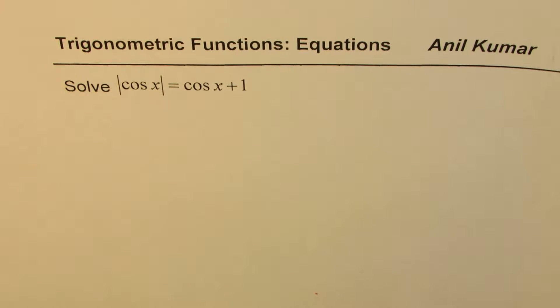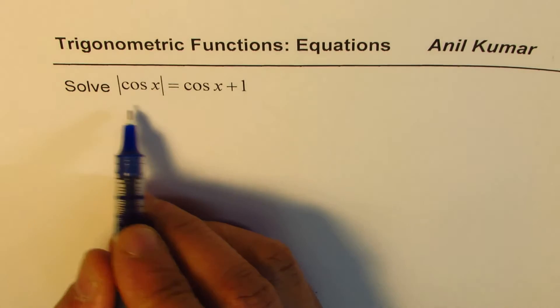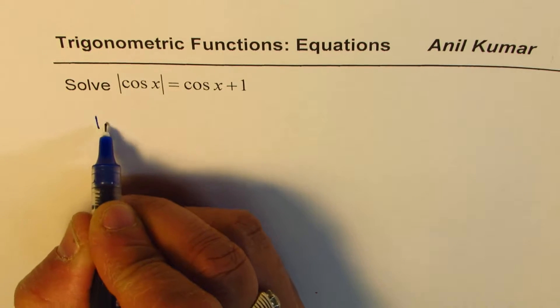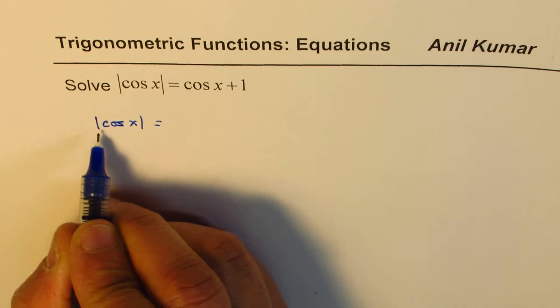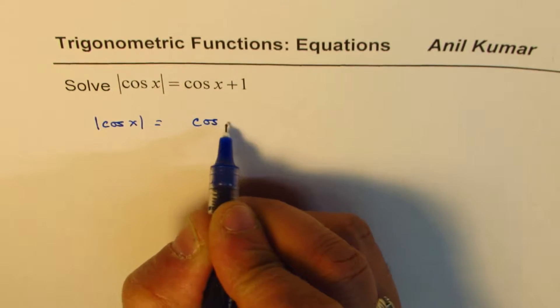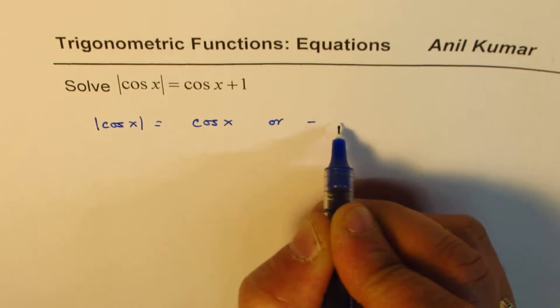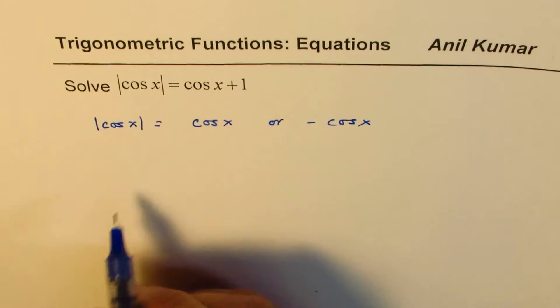You can pause the video, answer the question, and look into my suggestions. Let's look into what cos x absolute value could be. That could be either cos x or minus cos x. Both are possible.